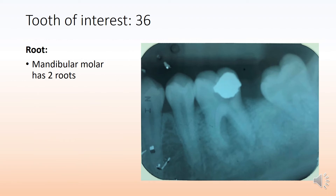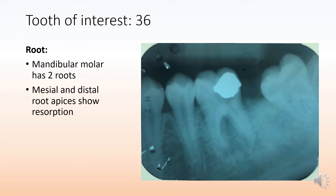Moving on to the root, the mandibular molar has two roots here, but what we can interestingly see is root resorption, pointed out by the yellow arrow marks. The roots appear fuzzy and the definition of the root apex can no longer be made out, which gives an indication of root resorption.